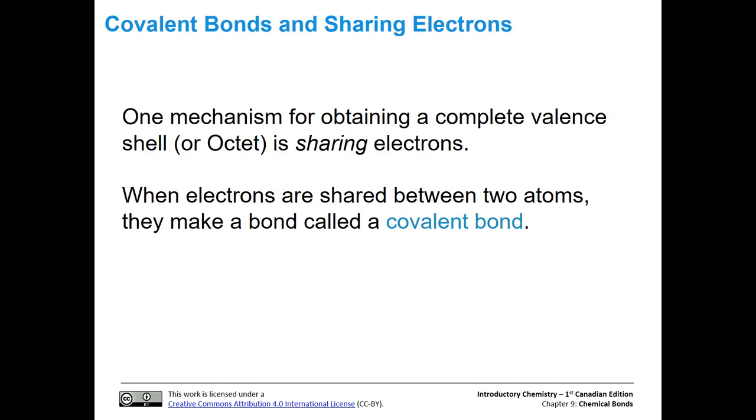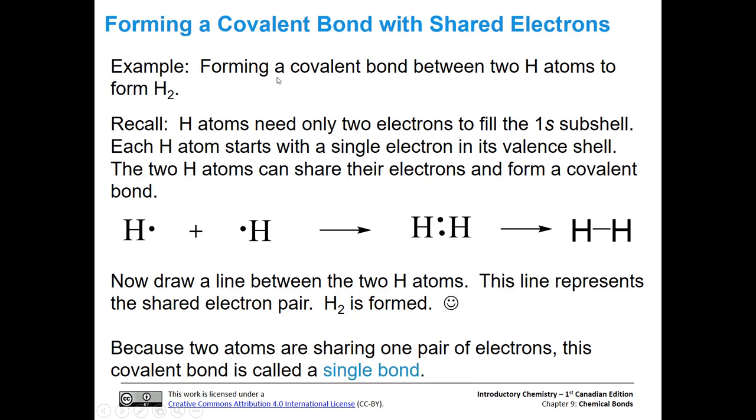That's what we're going to discuss today, how to draw structures that show these covalent bonds. Let's make a covalent bond between two hydrogen atoms. We're going to form H2, diatomic hydrogen. Remember that hydrogen atoms only need two electrons to fill the 1S subshell. Each hydrogen starts with a single electron, and if two of them get together, they can each share the other hydrogen's electron and form a covalent bond.